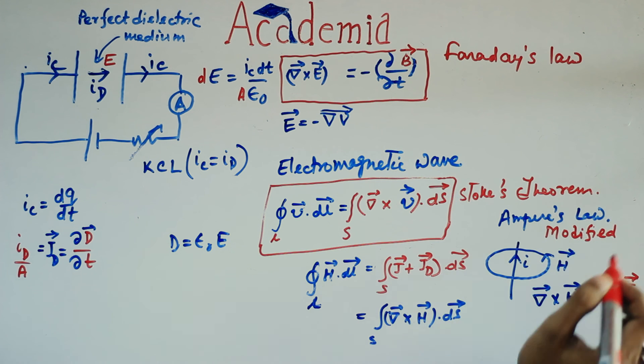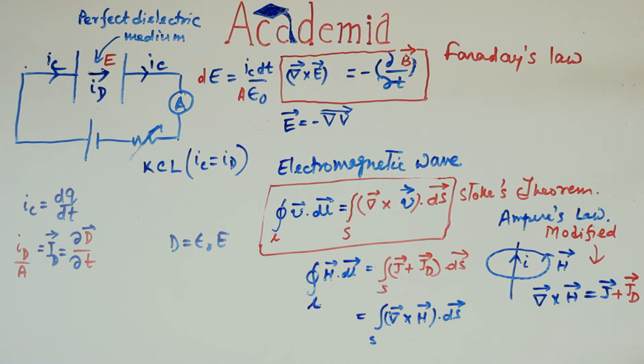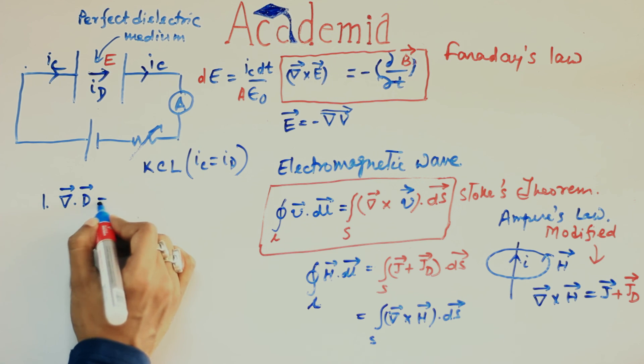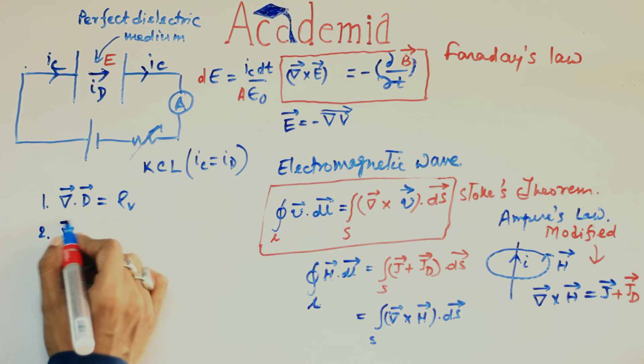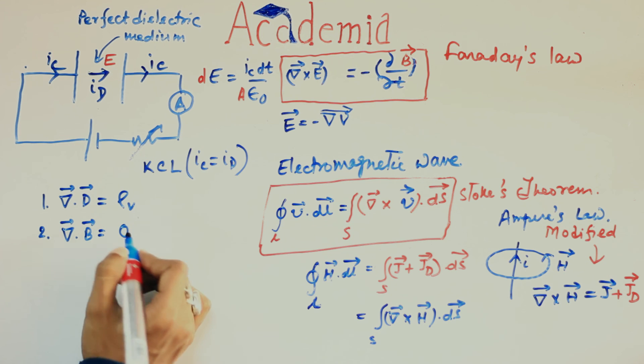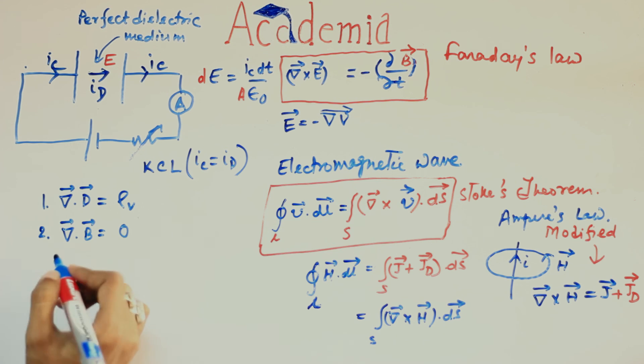One, Divergence of D is equal to rho B borrowed from Divergence Theorem as we have already calculated in our earlier class. Two, Divergence of B is equal to zero. Application of Divergence theorem on magnetic field, this to be calculated in our earlier class.